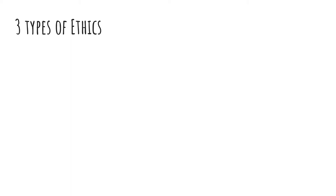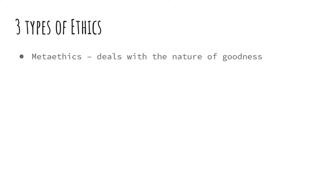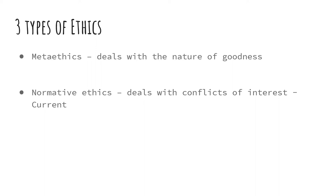As a larger overview, there are three different types of ethics we talk about in this course. Metaethics is the foundational beliefs in ethics — it deals with the nature of goodness and what we mean by good and evil, if it even exists. Normative ethics deals with conflicts of interest and conflicting moral beliefs and how to settle problems between people.